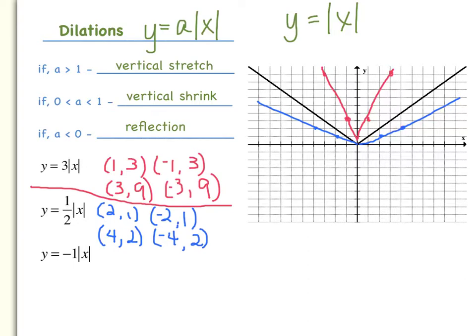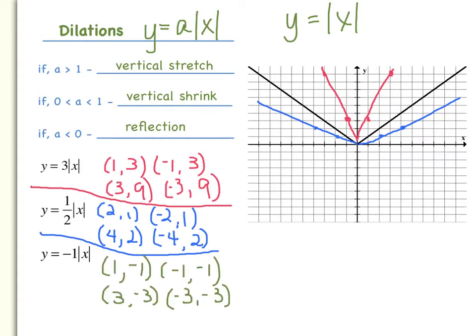Now let's look at our last dilation example where the a value is less than zero — in this case, negative 1. If x is 1, the absolute value of 1 is 1, and negative 1 times 1 is negative 1. I did the same for x equals negative 1, 3, and negative 3. When plotted, the new graph is reflected over the x-axis — it's a mirror image of the parent function.